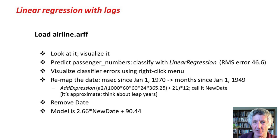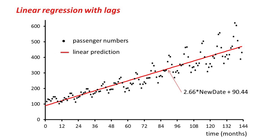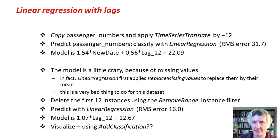So far, not very interesting. Here is the regression line. You can see the data is kind of cyclic — passenger numbers depend on the month — yet the regression line is just a straight linear prediction. Let's do something a little bit more interesting.